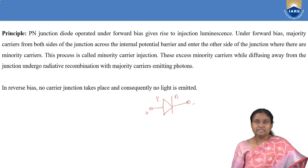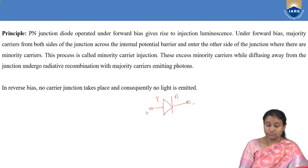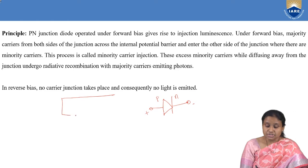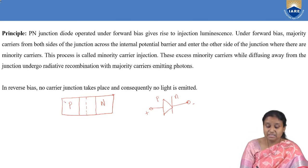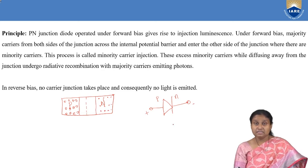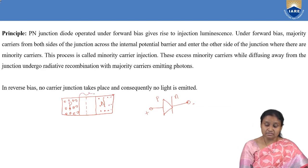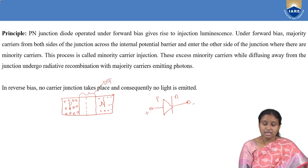So if we recollect what exactly is a forward biased PN junction diode: once we take our PN junction, we have the P side and the N side. In P side we have holes and in N side we have electrons. This P region and N region have a depletion layer with immobile charge carriers.